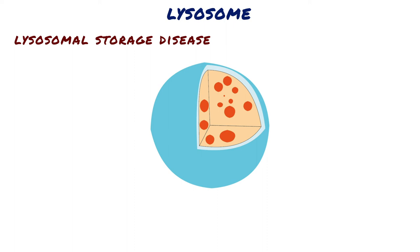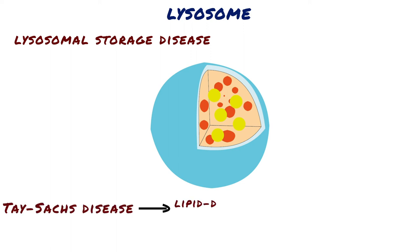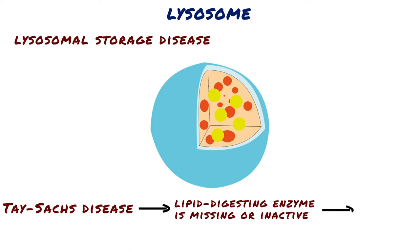The lysosomes become engorged with indigestible substrates, which begin to interfere with other cellular activities. In Tay-Sachs disease, for example, a lipid-digesting enzyme is missing or inactive and the brain becomes impaired by an accumulation of lipids in the cells.